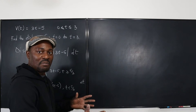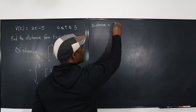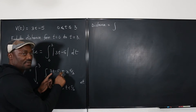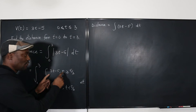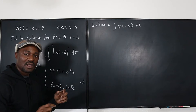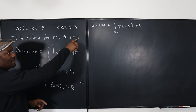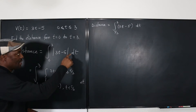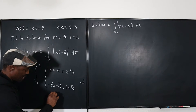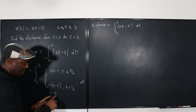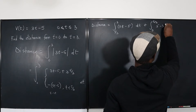Now we can take our integrals in bits. We integrate 3t minus 5 only where it applies — from 5/3 to 3. For values from 0 to 5/3 we use the other piece. The negative of (3t minus 5) can be written as 5 minus 3t by distributing the negative sign. So distance equals the integral from 5/3 to 3 of (3t minus 5) dt, plus the integral from 0 to 5/3 of (5 minus 3t) dt.